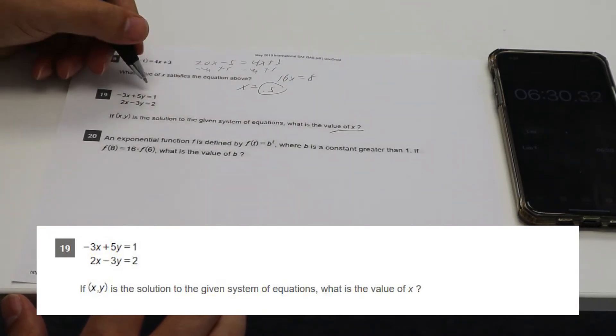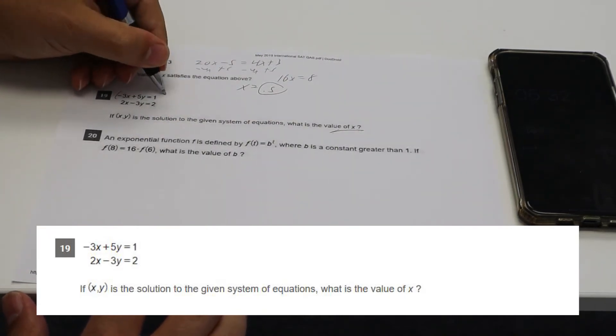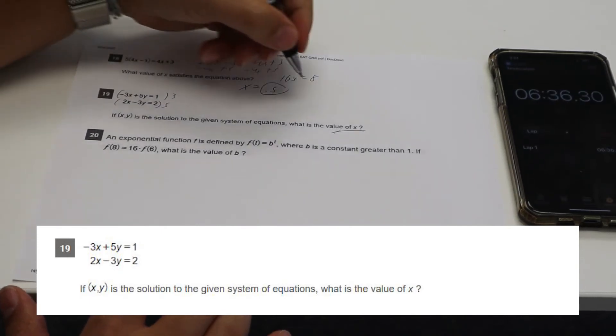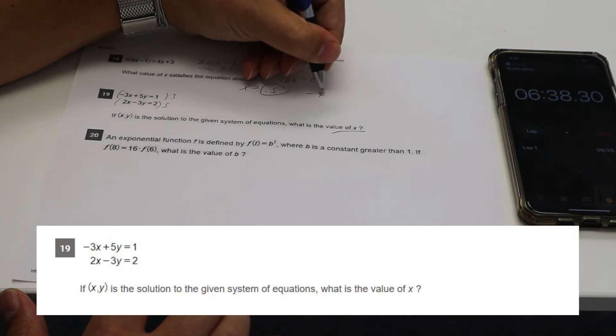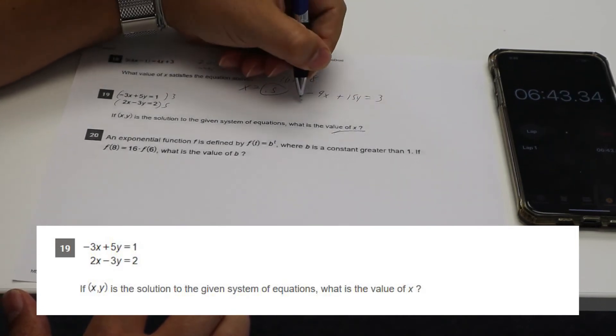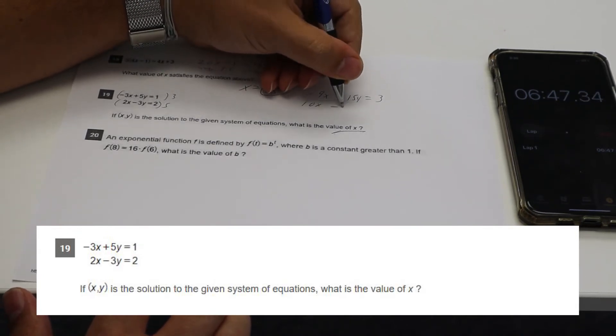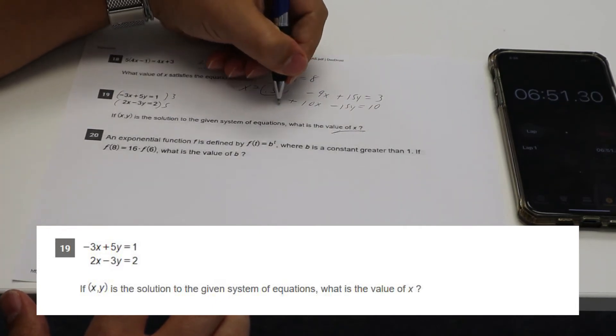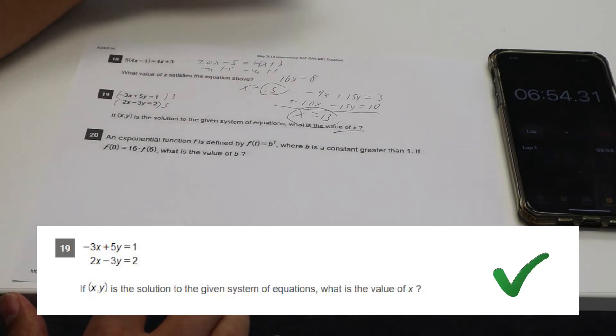This is going to be annoying because these don't match up. We want to solve for X. So I'm going to try to get rid of the Y. So I'm going to multiply this by three and this by five. So we're going to get negative nine X plus 15 Y equals three and 10 X minus 15 Y equals 10. This works out nicely. When you add them together, you get X equals 13. Boom.